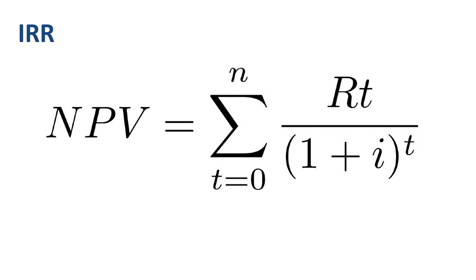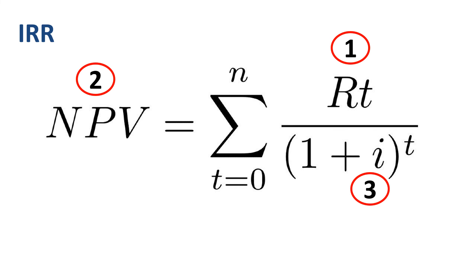Here are the steps to use when you want to determine internal rate of return. Step 1: start with the nominal cash flows. Step 2: set NPV to zero. Step 3: calculate IRR as the output variable.